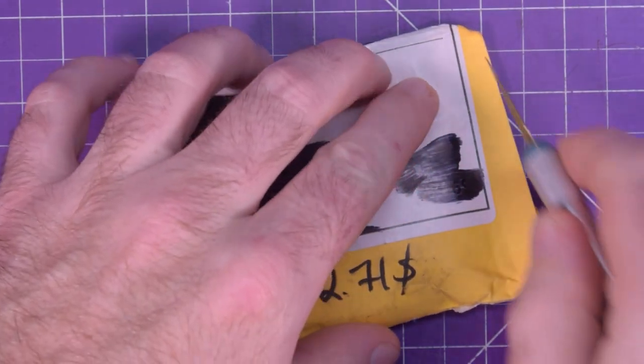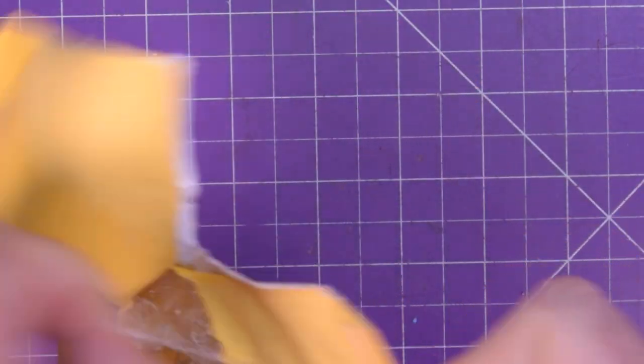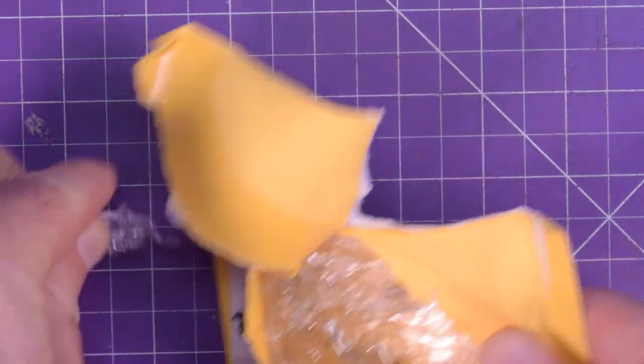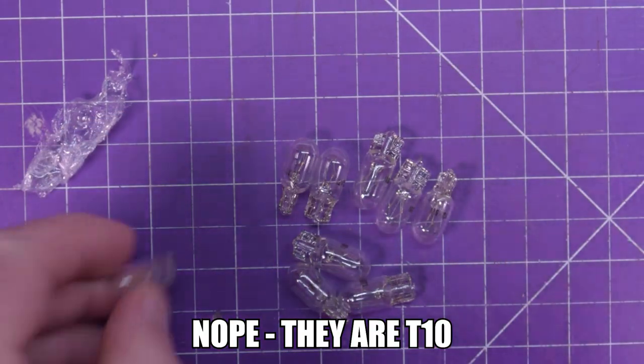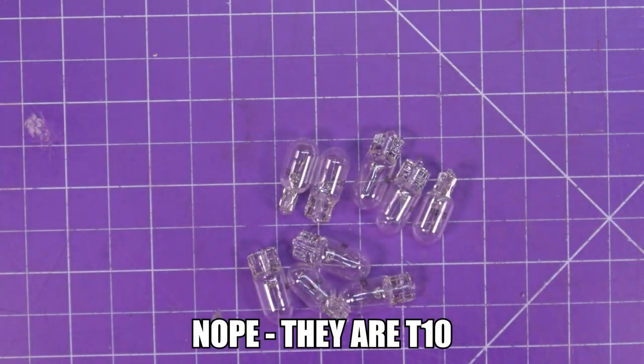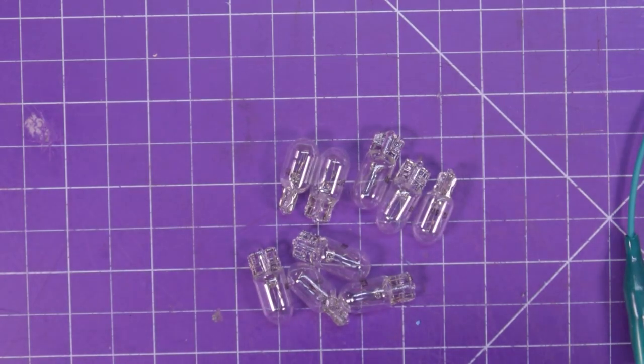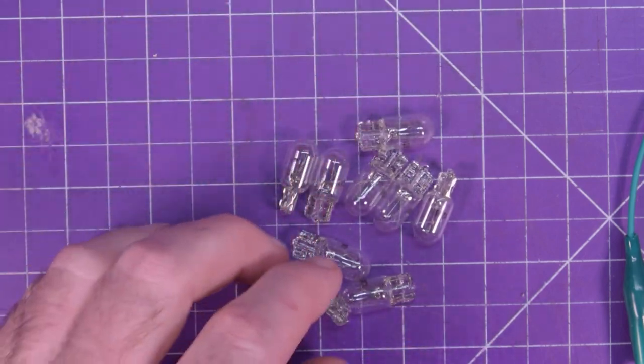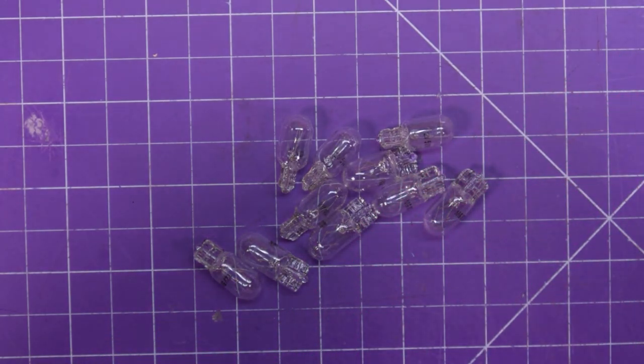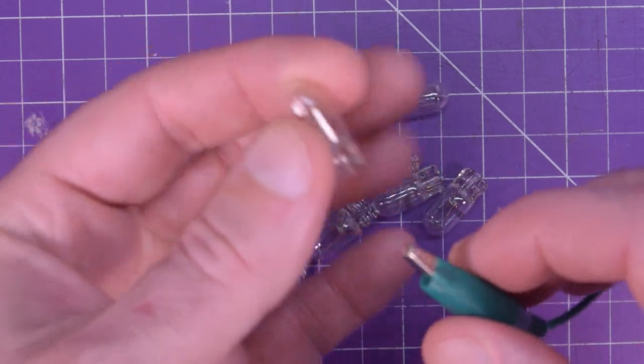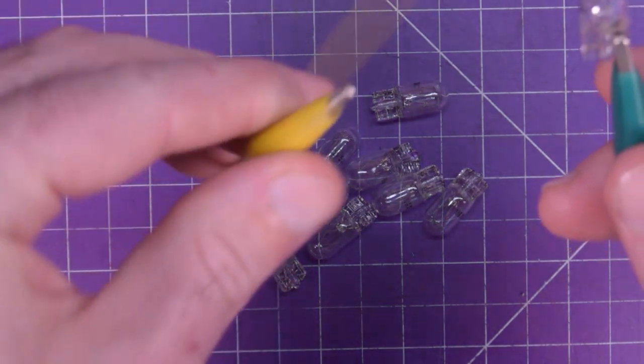Next one up is this one here. $2.71. Again, no idea what's inside. Oh! Some more light bulbs. These are T5 wedge bulbs. These work absolutely fantastically to be little loads in your electronics projects. They're incredibly cheap. I mean, $3 for 10 of them here. But I think you can get them even cheaper. Like, I saw some... Like, a hundred of them for very little money.